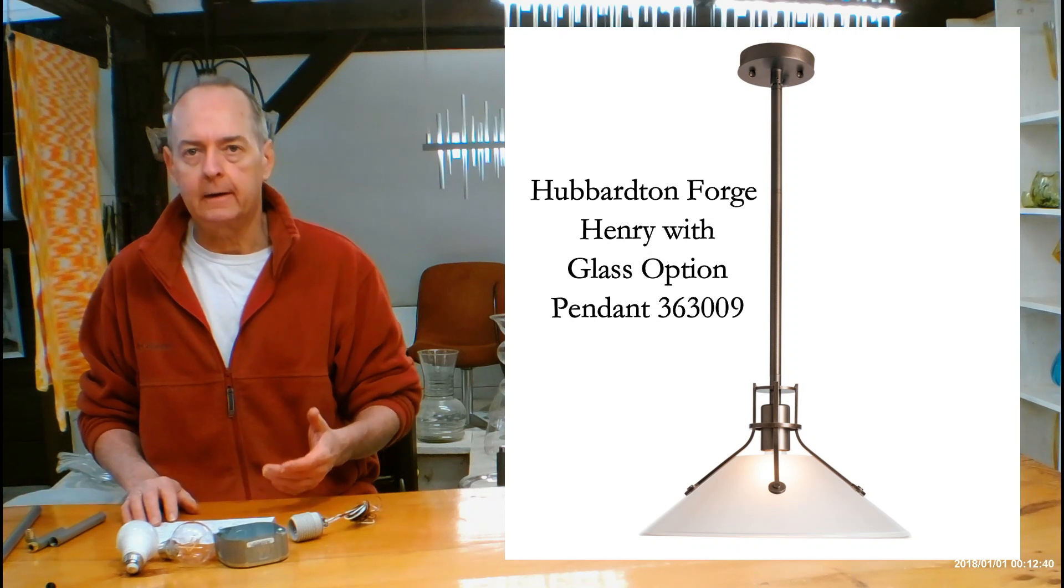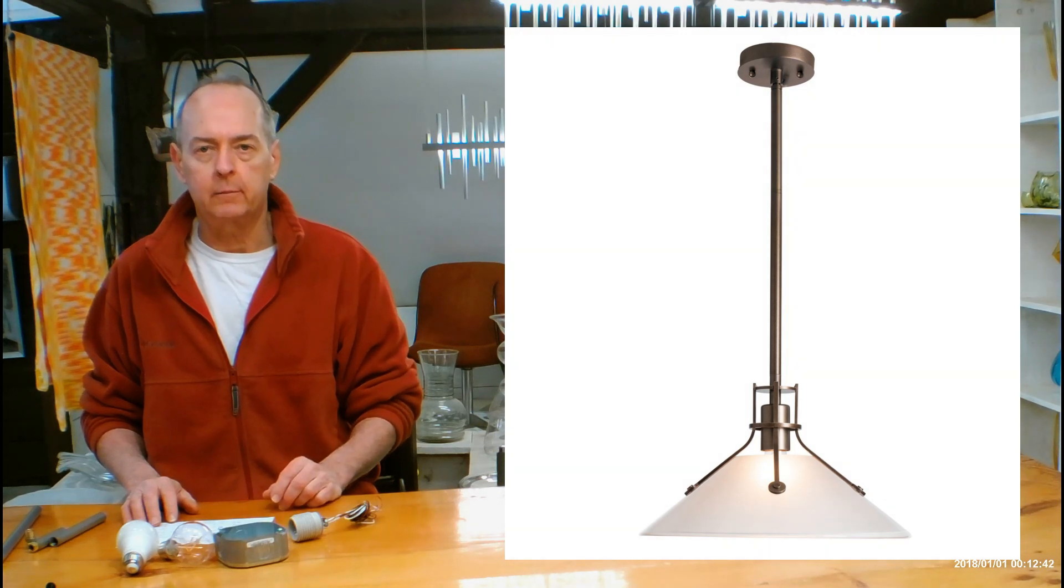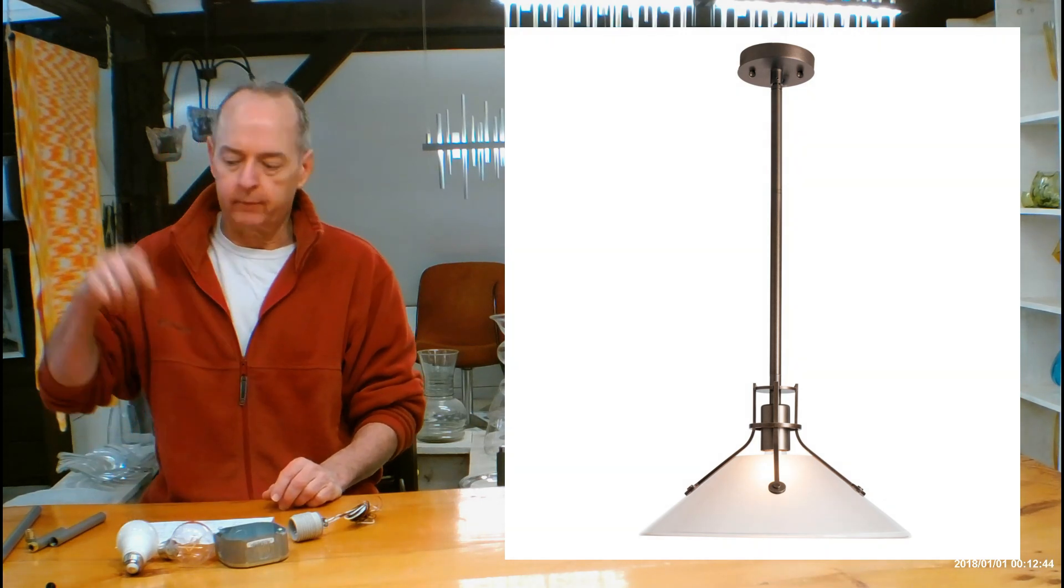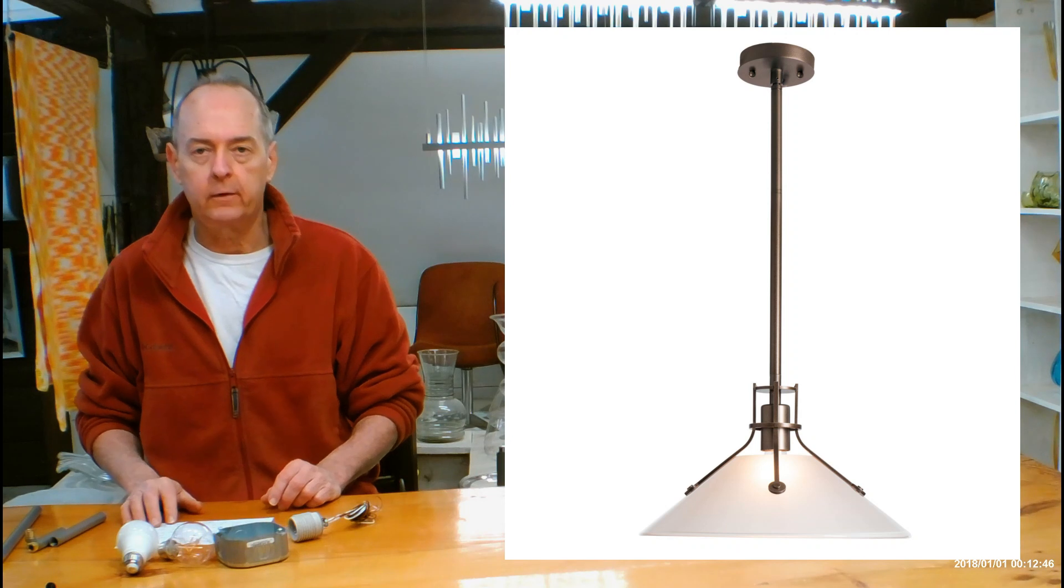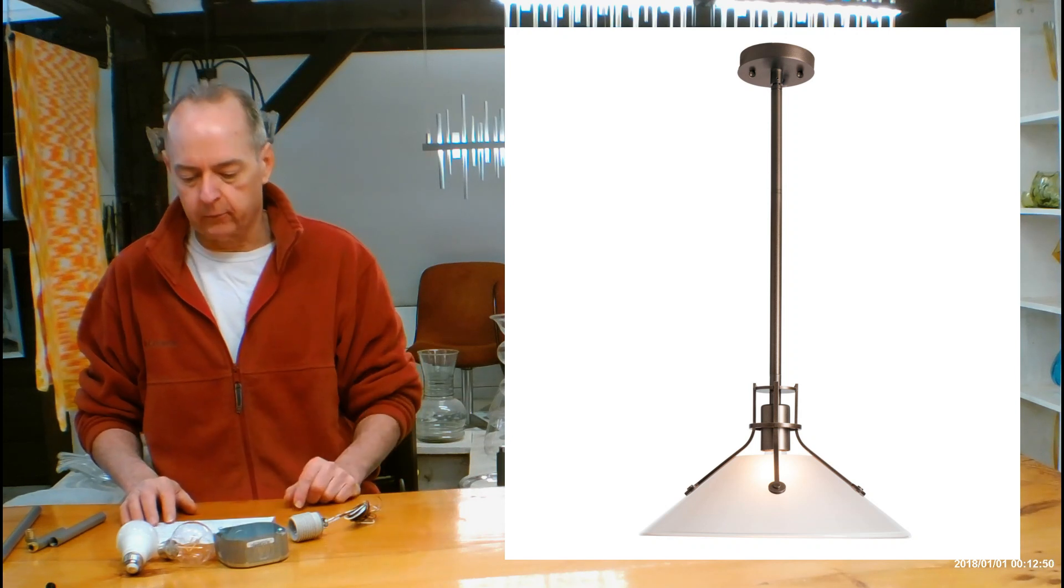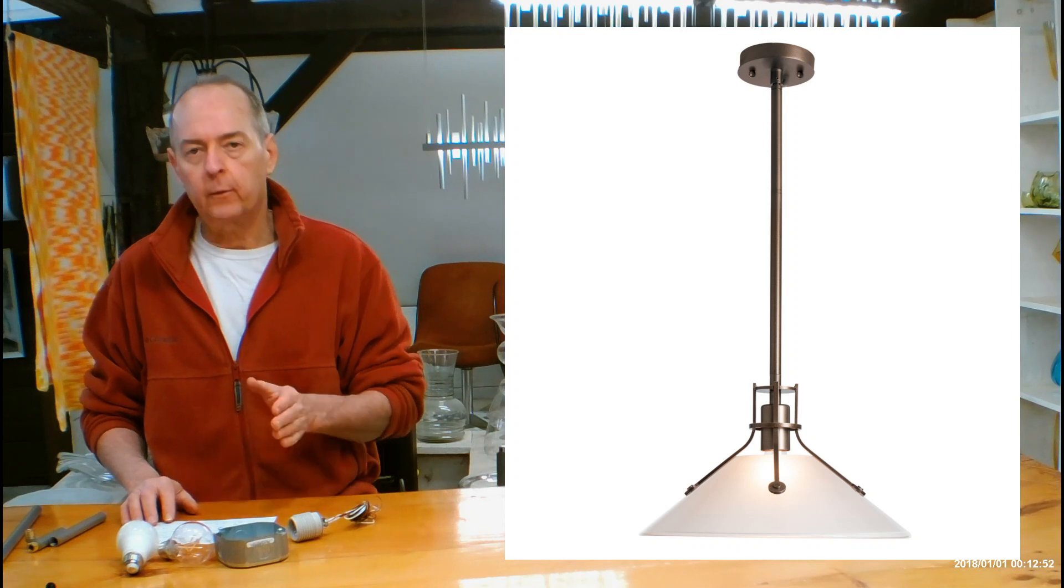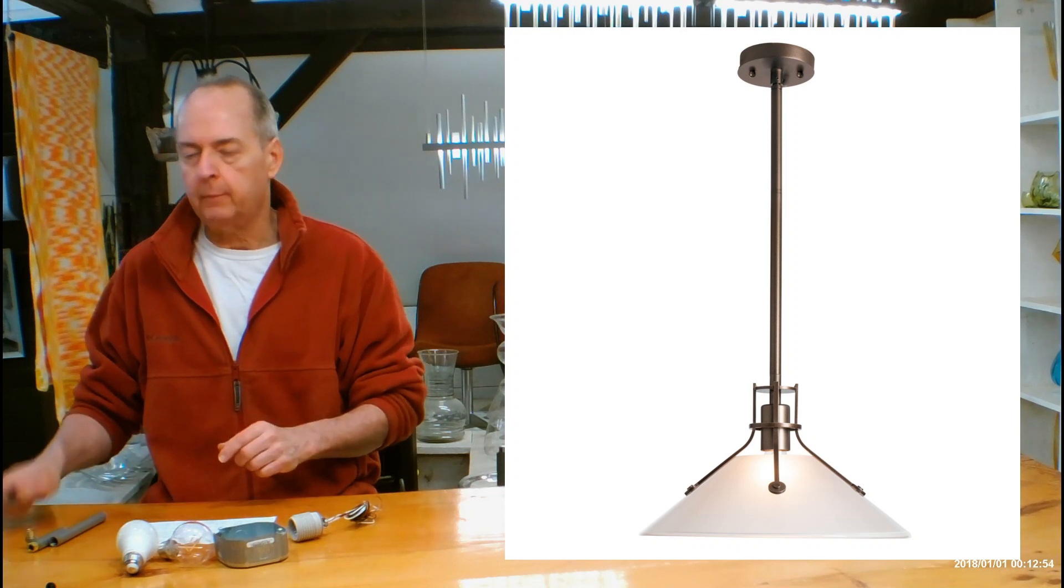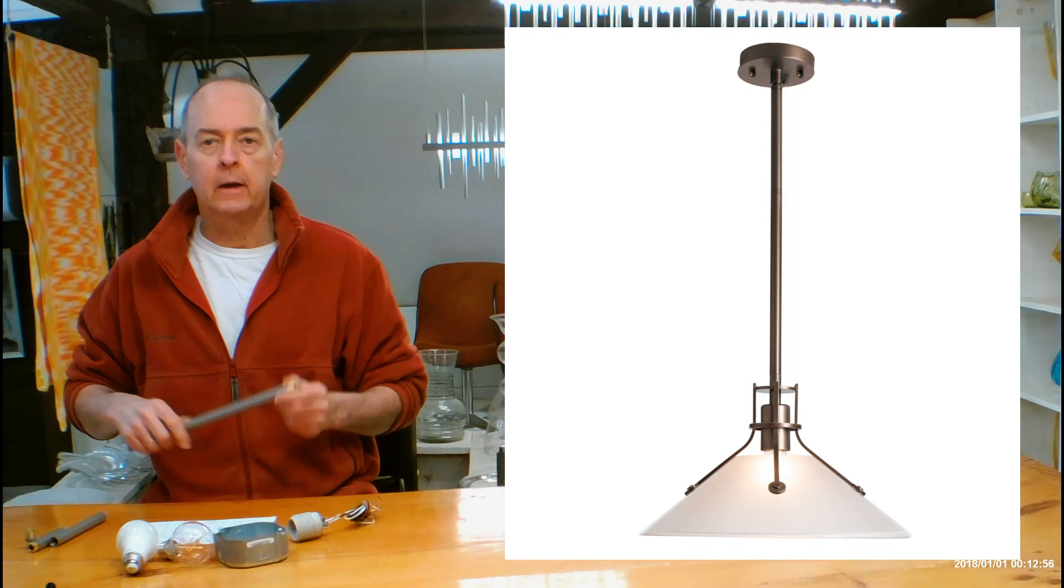When we talk about overall height, now we're talking about the distance from the bottom of the fixture to the actual ceiling itself, including all the different parts. 14.5 at its shortest, which means this could be a semi-flush if you want to use it for that. And you can go all the way to 44.5 with the pipes that are going to be shipped with this automatically.